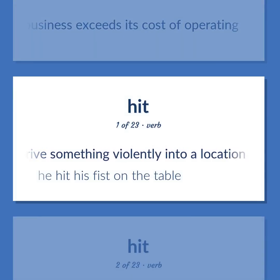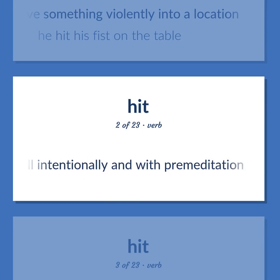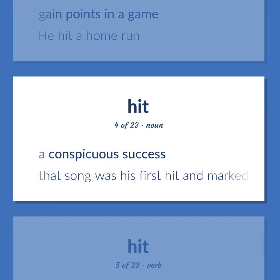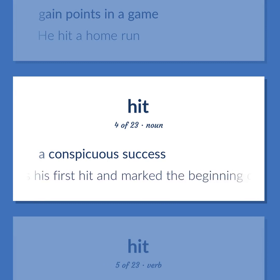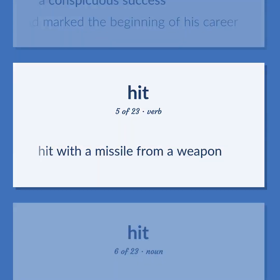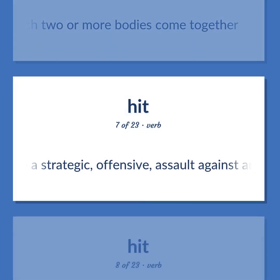Hit: Drive something violently into a location — he hit his fist on the table. Kill intentionally and with premeditation. Gain points in a game — he hit a home run. A conspicuous success — that song was his first hit and marked the beginning of his career. Hit with a missile from a weapon. Physics: A brief event in which two or more bodies come together. Make a strategic, offensive assault against an enemy, opponent, or a target.